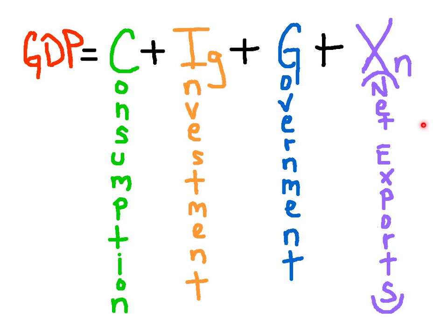Net exports consists of exports minus imports, or X minus M. In the US, this would be the smallest component of the GDP.